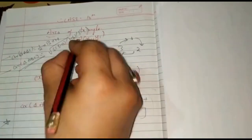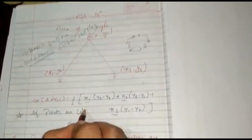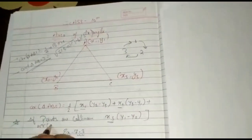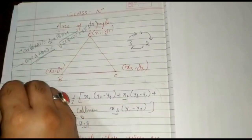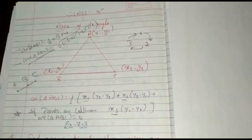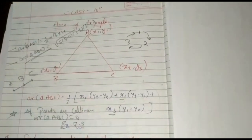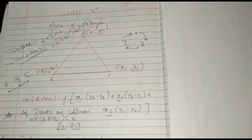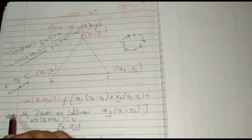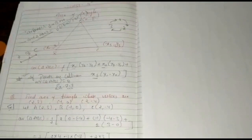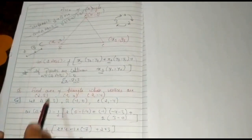You have to understand one more concept: if three points are collinear, then the area of triangle ABC is equal to zero. If points A, B, and C are collinear, they are not forming a closed surface, so they cannot enclose any area. To find the area of any field it must be a closed surface. So if the points are collinear, the area of the triangle will be zero. These are the two important concepts for this exercise: the formula, and that collinear points give area zero.